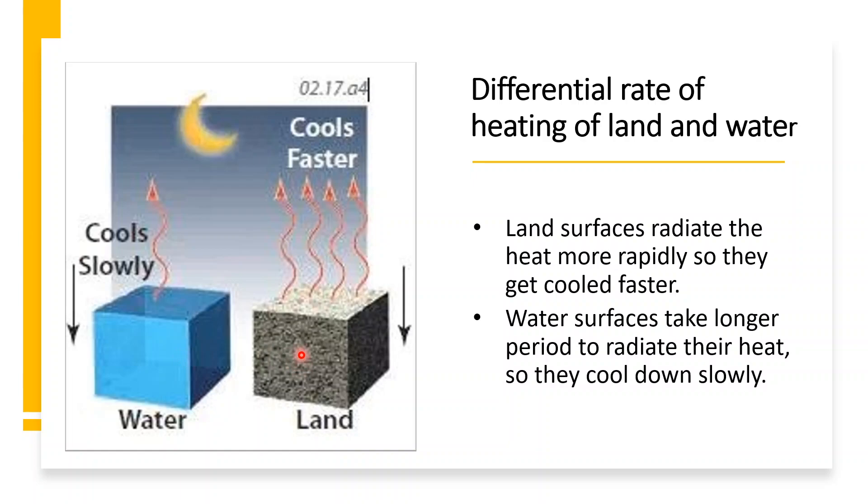Land surfaces radiate the heat more rapidly. So, it gets cooler faster. However, water surfaces take longer period to radiate the heat and so they cool very slowly.